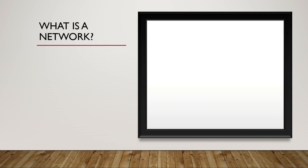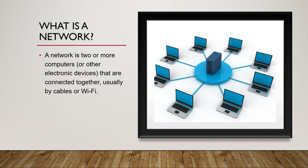So first, what is a network? When we say network, what comes to mind is something connected to each other. It can be people, it can be devices, etc. A network is two or more computers or other electronic devices that are connected together, and the connection is made by cables or Wi-Fi.